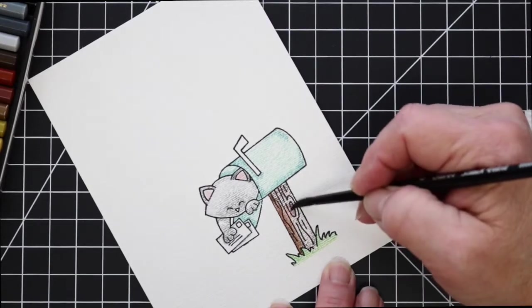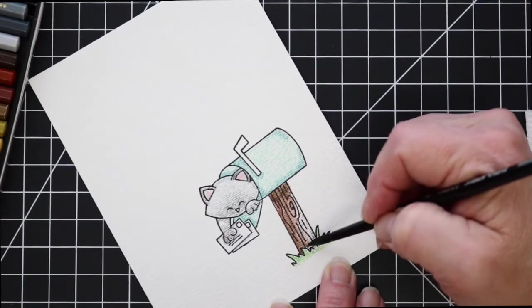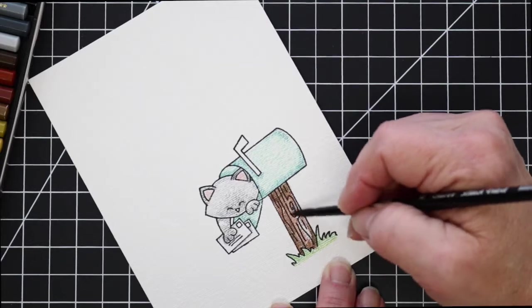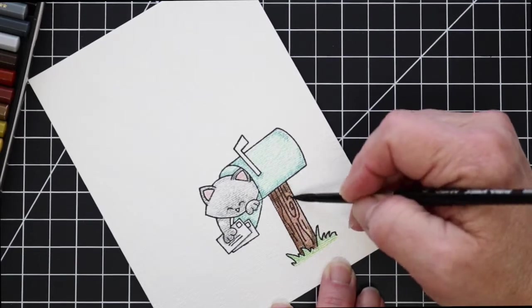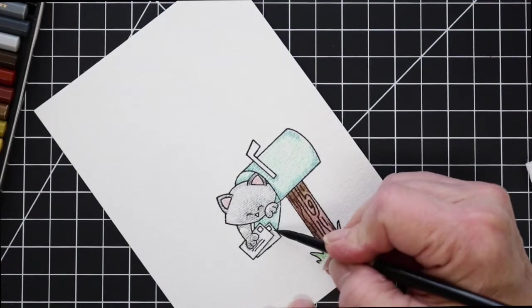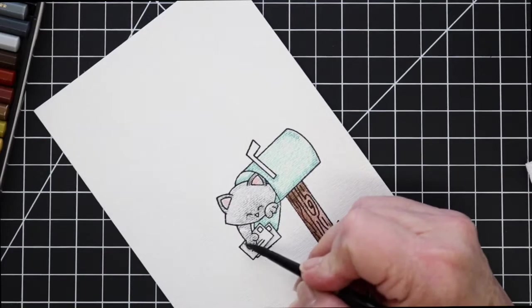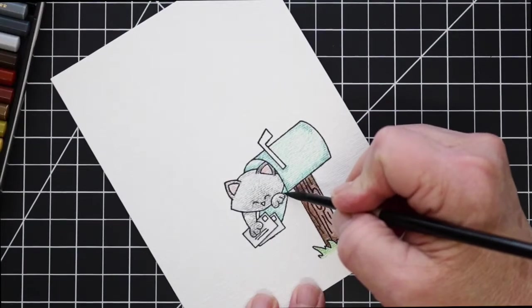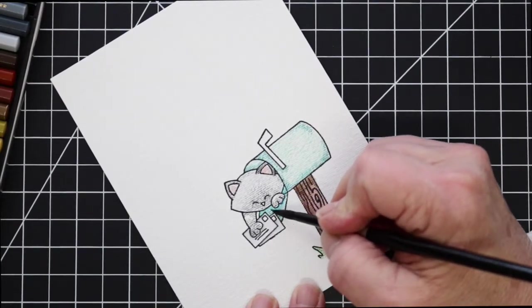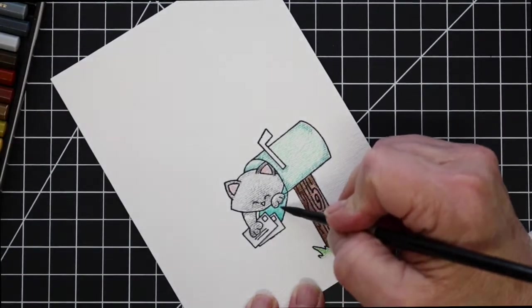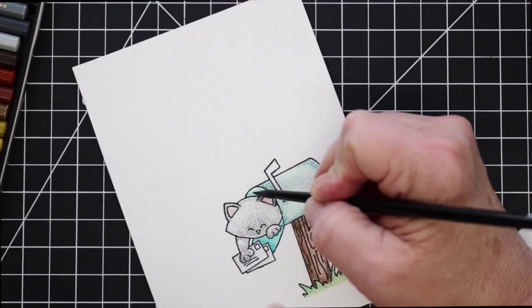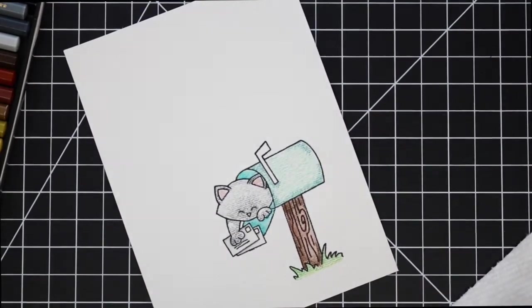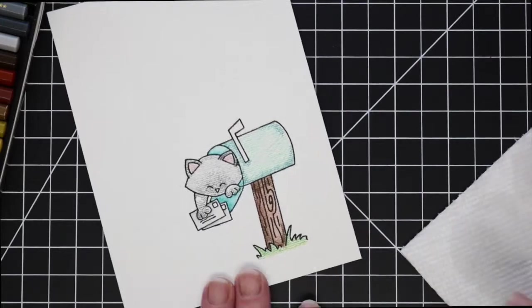I'm using a silver brush number six round and I'll just go through and wet all of the watercolor pencil areas and spread out that color. I will try to move the pigment around so that I leave some lighter areas and darker areas.